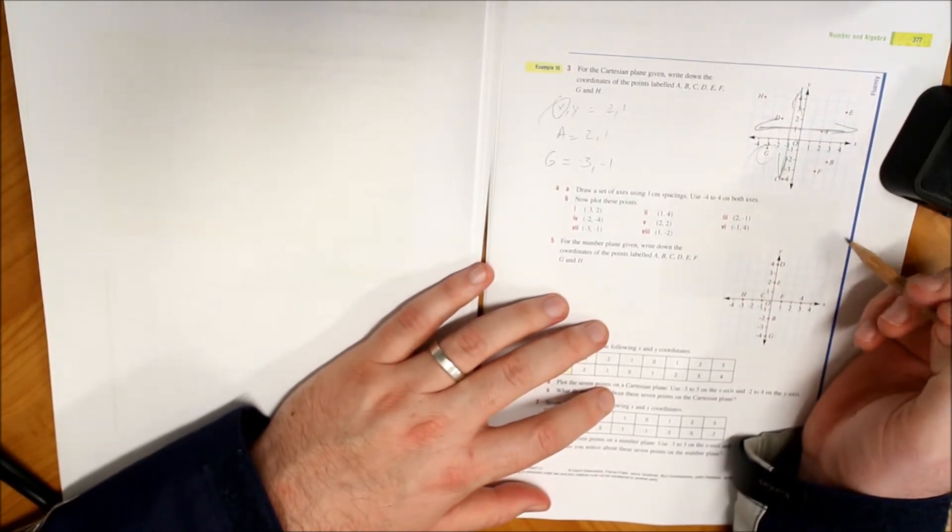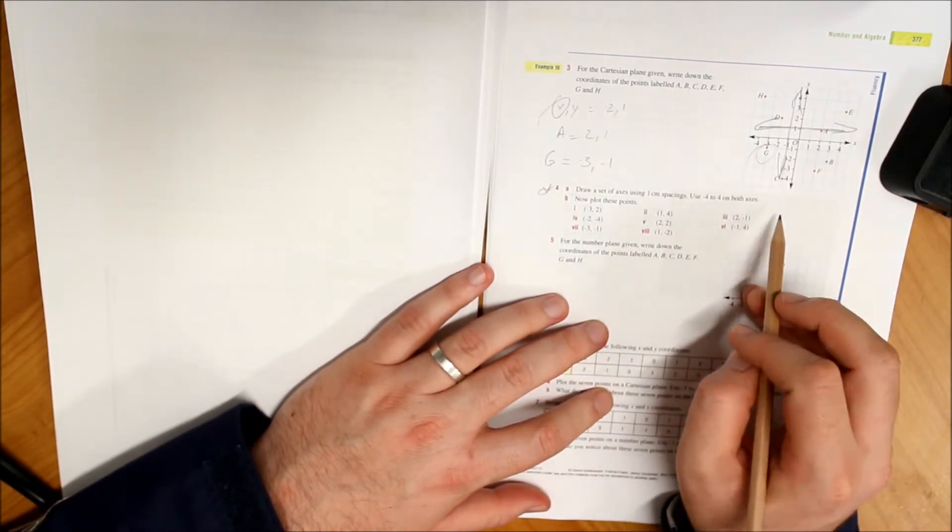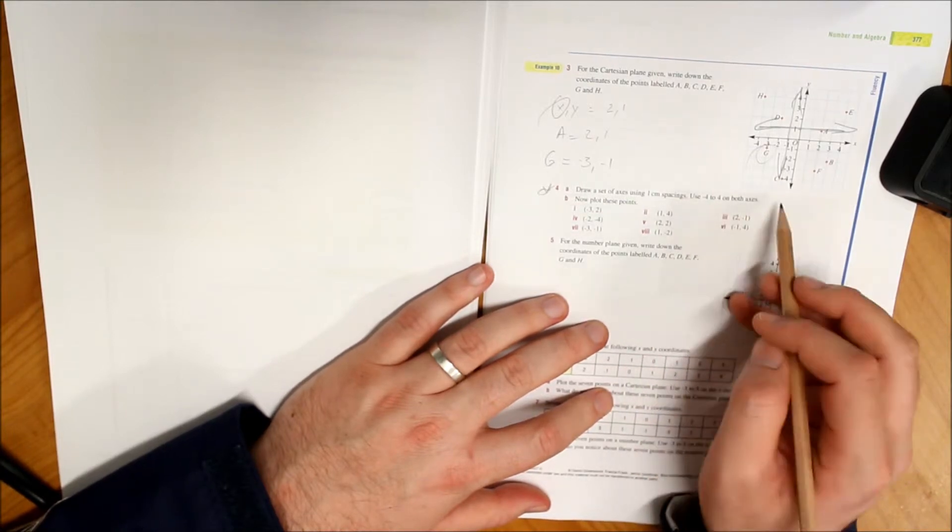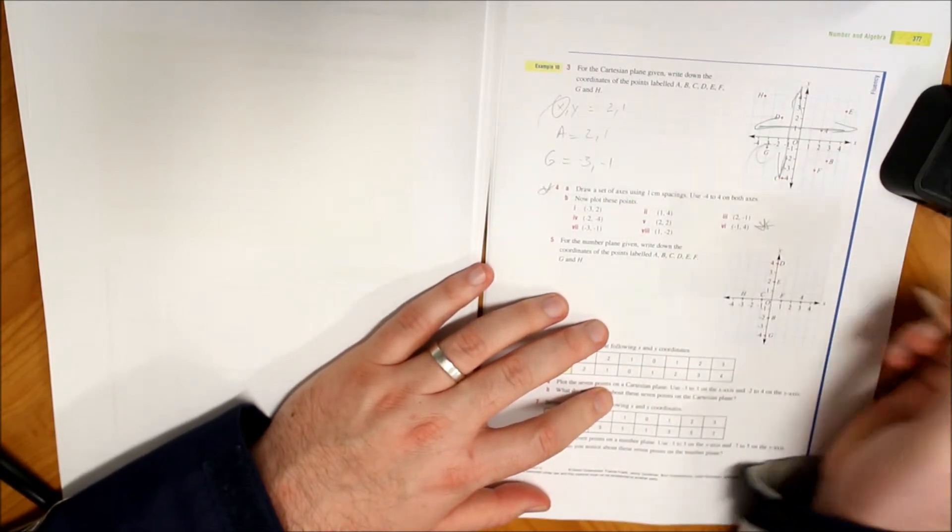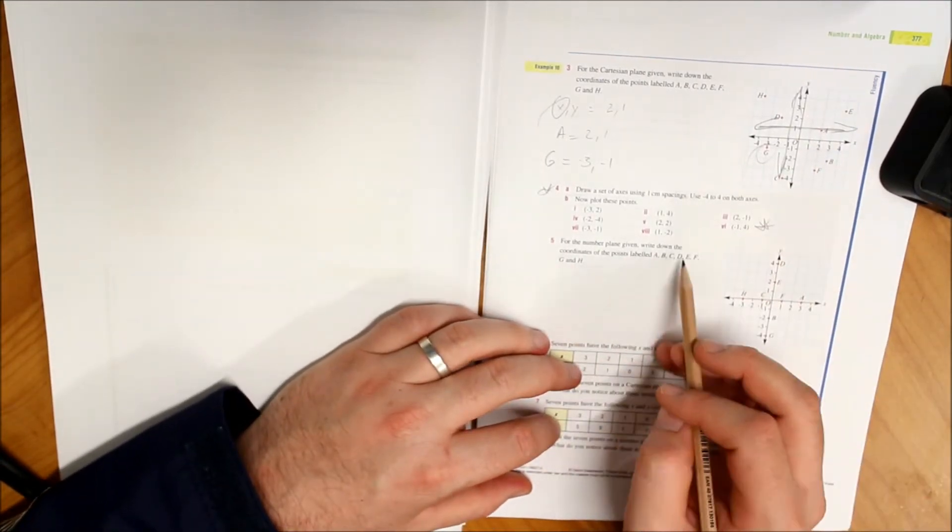Pretty straightforward activity. In this one, which you'll do in class, it says draw a set of axes using one centimeter spacings, using negative four to positive four on both axes. So you'll need to plot those on a graph a lot like this.